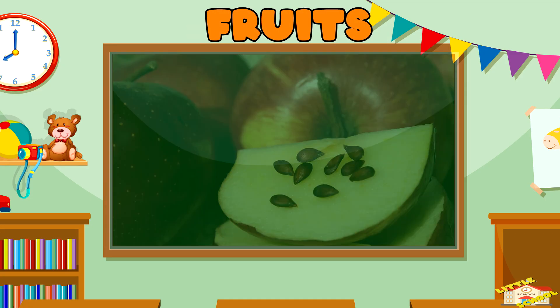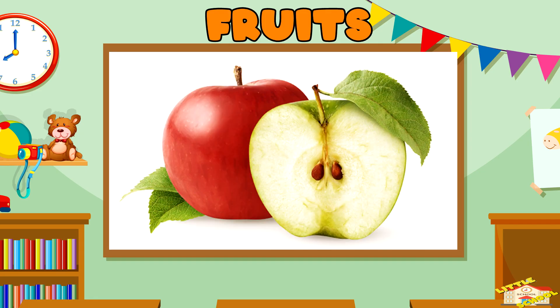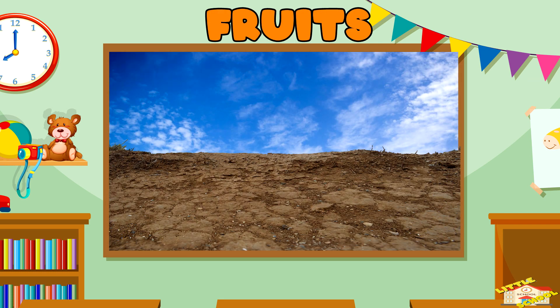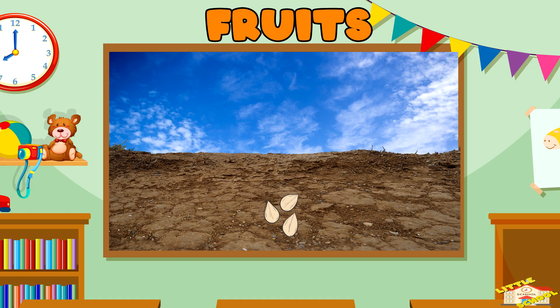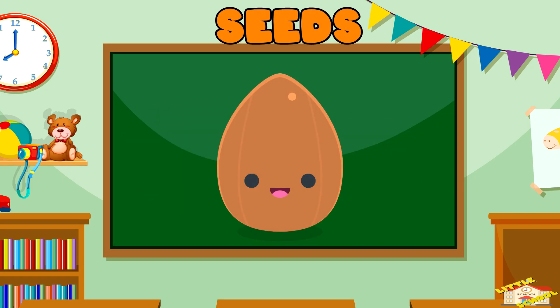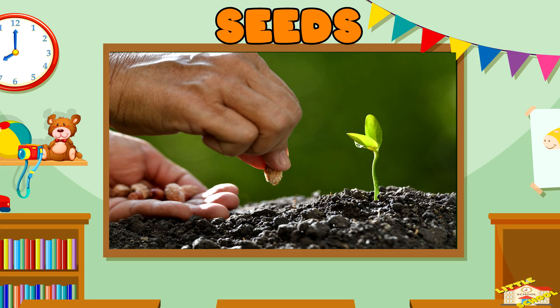Fruits protect the seeds inside. When animals or people eat the fruit, they often carry the seeds to new places where more plants can grow. Seeds are like tiny baby plants waiting to grow.